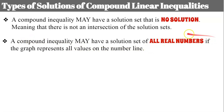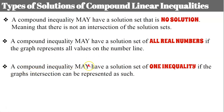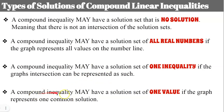A compound inequality may have a solution set that represents all real numbers if the graph represents all the values on the number line. It may also have a solution set that turns out to be one inequality rather than two if the graph's intersection can be represented as such. And a fourth type: a compound inequality may have a solution set that is one value, something like x equals 2, if the graph represents one common solution. Always graph your solution sets to give yourself a visual representation — that will trigger whether you need no solution, all real numbers, one inequality, or just one value.